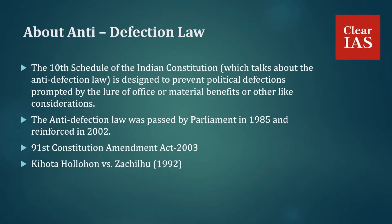The 91st Amendment aimed to debar defectors from holding public offices and to strengthen the anti-defection law. Earlier, defection by one-third of elected members of a political party was considered a merger; the amendment changed it to at least two-thirds. In the landmark Kihoto Hollohan case, the Supreme Court clarified that the 10th Schedule is constitutionally valid — it neither impinges upon the freedom of speech and expression nor subverts the democratic rights of elected members. The court also upheld the sweeping discretion available to the Speaker in deciding disqualification cases, while holding that the presiding officer's decision shall be open to judicial review.